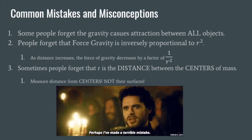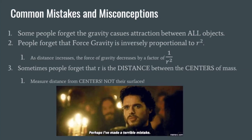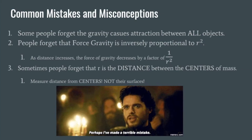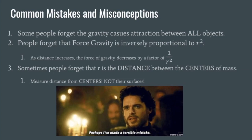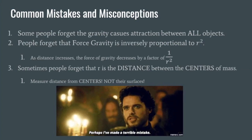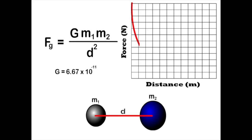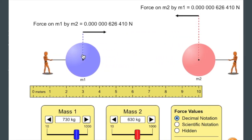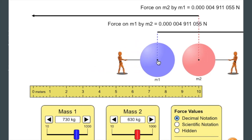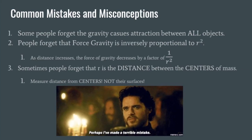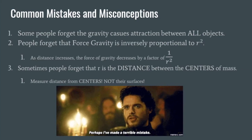Let's talk about some common mistakes and misconceptions. Some people forget that gravity causes attraction between all objects — if it has mass, there is a force of gravity. People forget that force gravity is inversely proportional to R squared, meaning as distance increases, the force of gravity decreases by a factor of 1 over R squared. As distance increases, gravity decreases; as distance decreases, gravity increases. People also forget that R is the distance between the centers of mass — measure from the centers, not the surfaces.